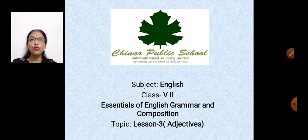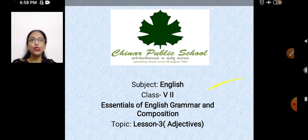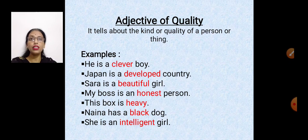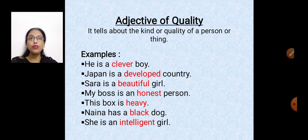What are we going to cover today? We will be covering different types of adjectives. The first one is adjective of quality. It tells about the kind or quality of a person. Now quality can be positive or negative. Like if I say 'he is ugly' — ugly is a negative quality. 'He is a slow learner' — that's also a negative quality.